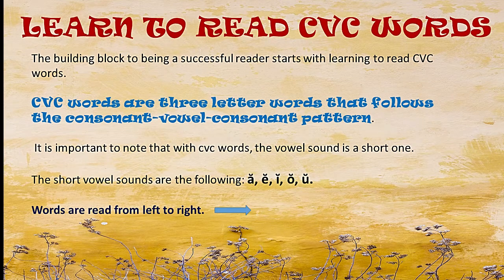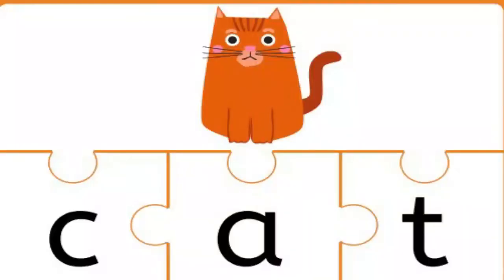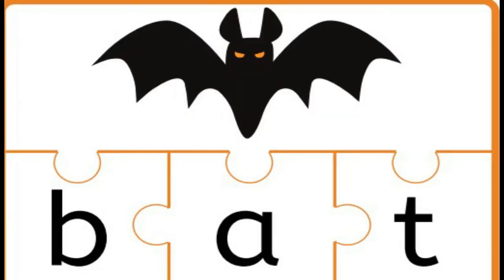Let us start learning how to read CVC words. C, a, t — cat. B, a, t — bat.